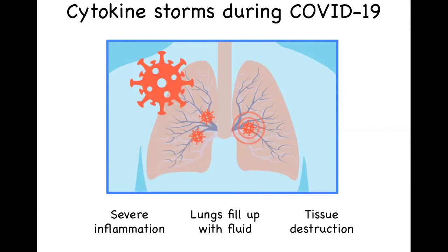Not every patient with COVID-19 will generate a cytokine storm, but the ones that do have a really hard time recovering from the disease. We still don't know why only some patients develop these cytokine storms. Genetic differences, the strength of the immune response amongst patients, and the amount of virus between patients are most likely involved.